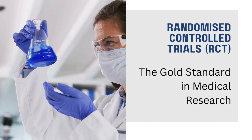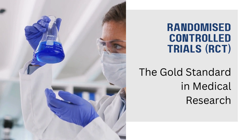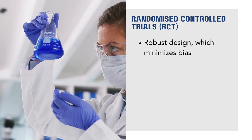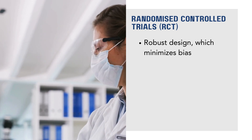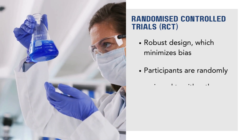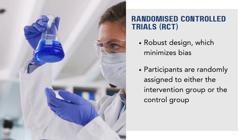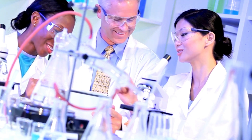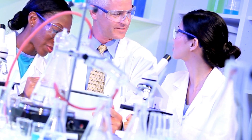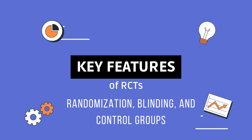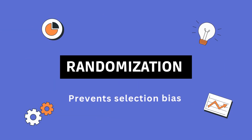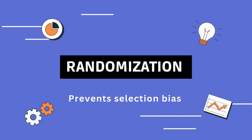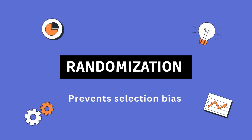Randomized controlled trials, or RCTs, are widely considered the gold standard in clinical research due to their robust design, which minimizes bias and allows for causal inference. In an RCT, participants are randomly assigned to either the intervention group or the control group, which could receive a placebo, no treatment, or standard care. The random assignment ensures that both known and unknown confounding factors are evenly distributed between groups, thereby isolating the effect of the intervention and preventing selection bias.